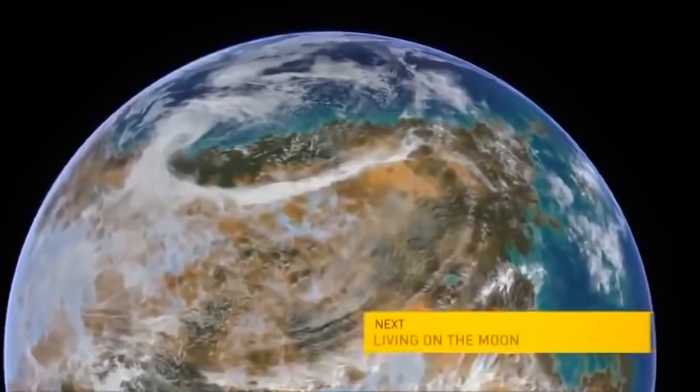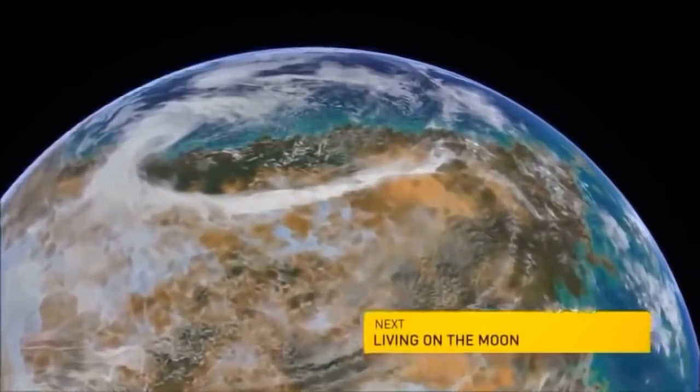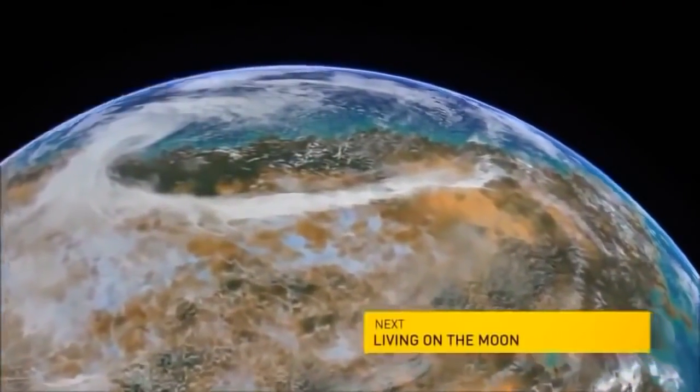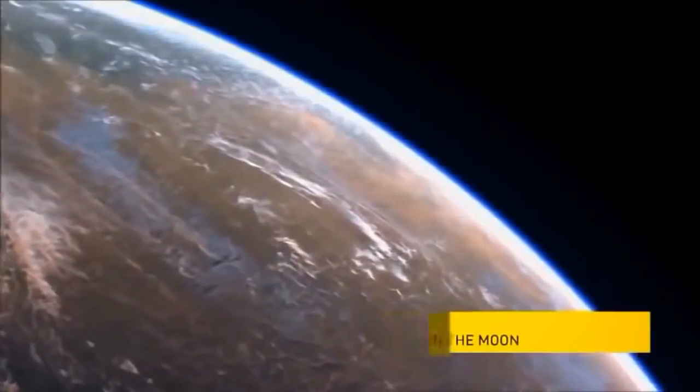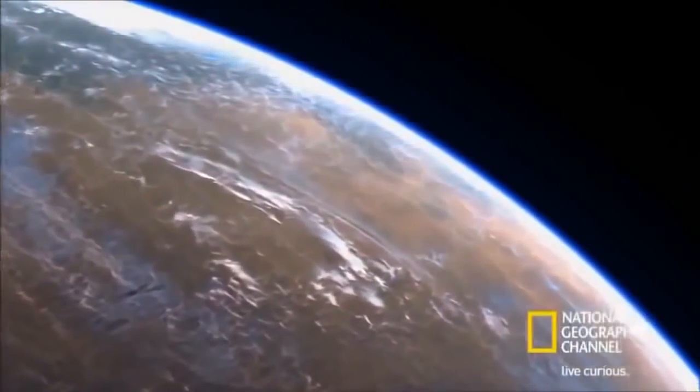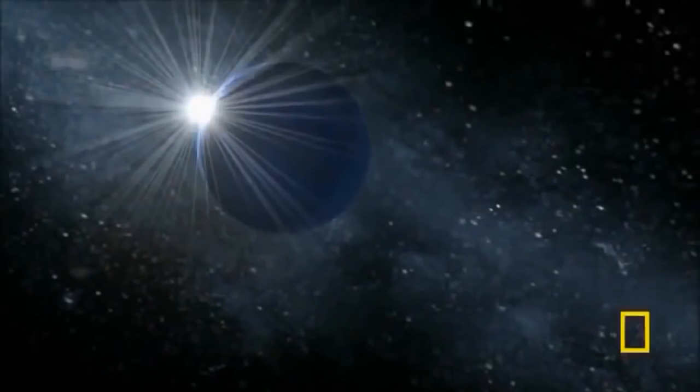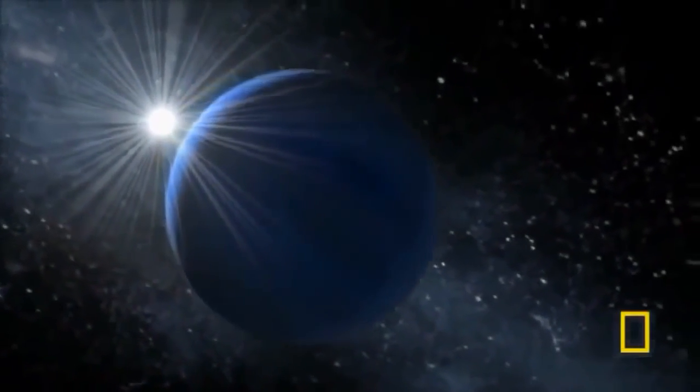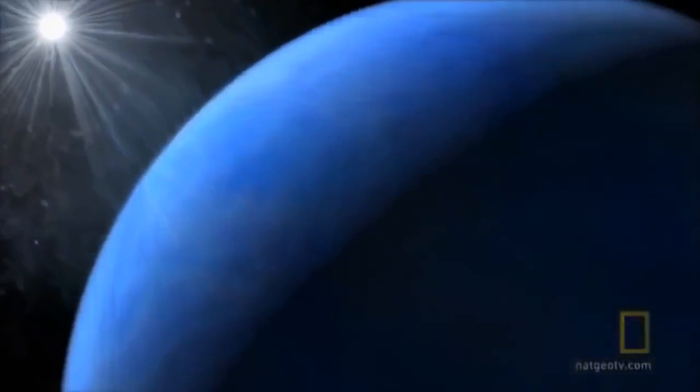One family that the super-Earths resemble, just like our own Earth, continents, oceans. Some of them may be very dry, like Mars. And then another family that we call water worlds or ocean planets, that are completely covered with water.